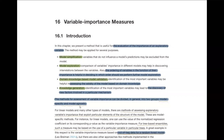Today we're going to cover Chapter 16 on variable importance measures. I think you've already read the chapter, so I'm going to try to explain it a little further. This chapter is about how we can measure how much each variable has its own importance within the model, especially for predictive purposes.